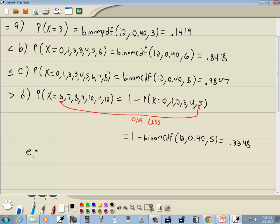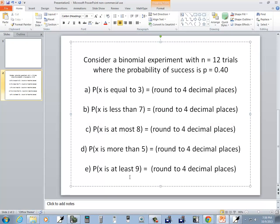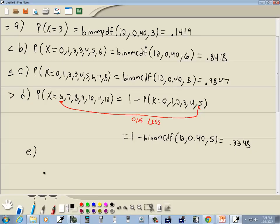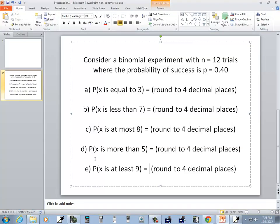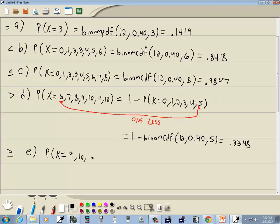Part e is at least 9. That means it could be 9, 10, and so on. This is the greater than or equal to case - that's what at least means. We've got x equals at least 9, which means we're going to go 9, 10, 11, and 12. We're going to rewrite this as 1 minus probability x is equal to 0, 1, 2, 3, 4, 5, 6, 7, and 8. Remember what I said on the previous problem: if it starts with a number other than 0, then whatever number it starts with, you subtract 1 from it, and that's where this goes up to. So that goes up to 8.